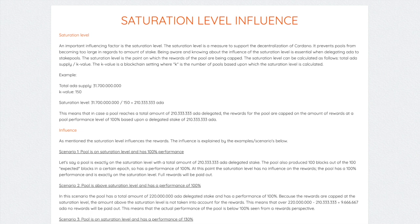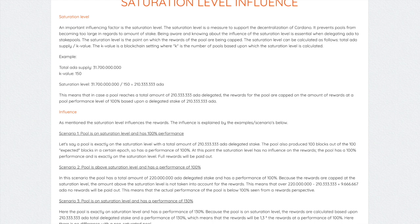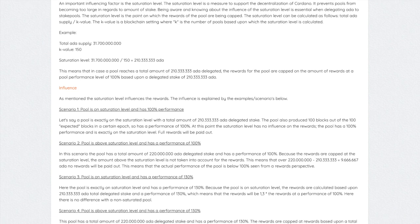He provided some scenarios on what saturation actually looks like. In scenario one, a pool is exactly on the saturation level with 210 million ADA delegated and produces 100 blocks out of 100 expected blocks in an epoch — 100% performance. At this point the saturation level has no influence on rewards: the pool was online, it minted all assigned blocks, and even though it's at that 210 million ADA saturation level, you won't see any decline in rewards because it's not past that saturation point.